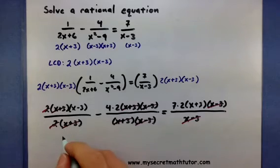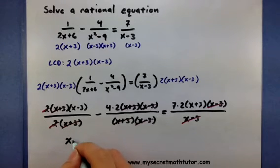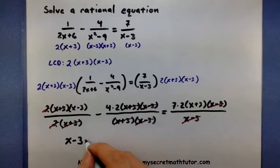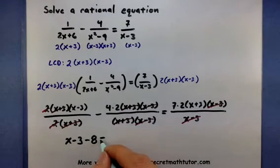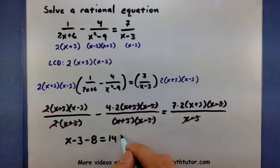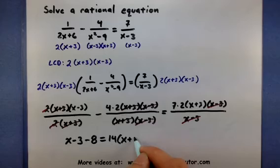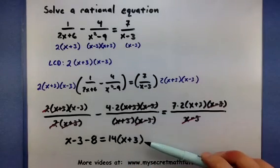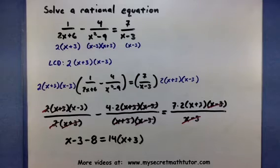So if we look at what's left over, I have an x minus 3 minus 4 times 2, so minus 8 equals 7 times 2 is a 14 times an x plus 3. Now look at that. We've taken our rational equation and turned it into just a linear equation.